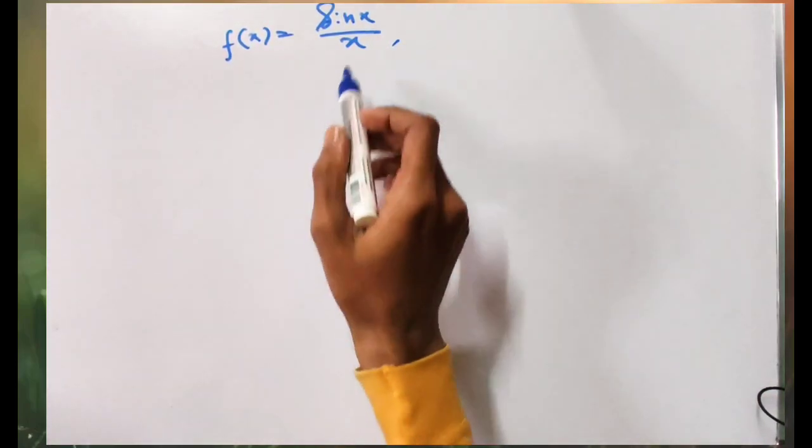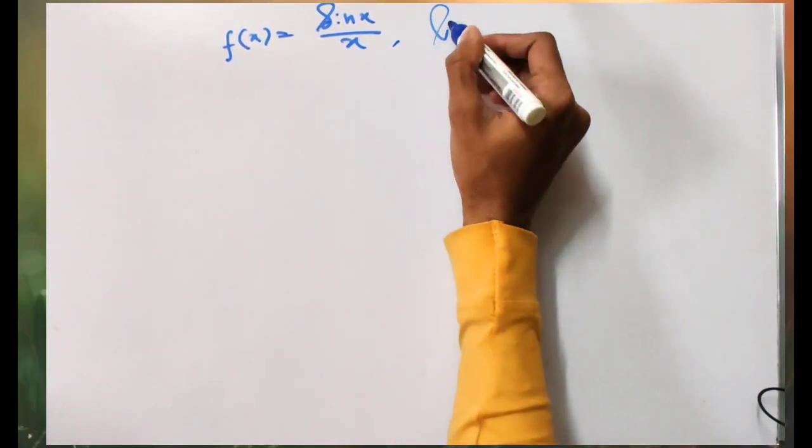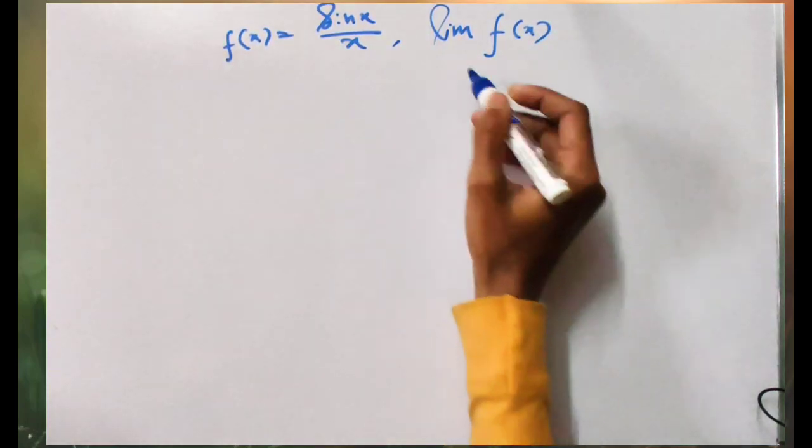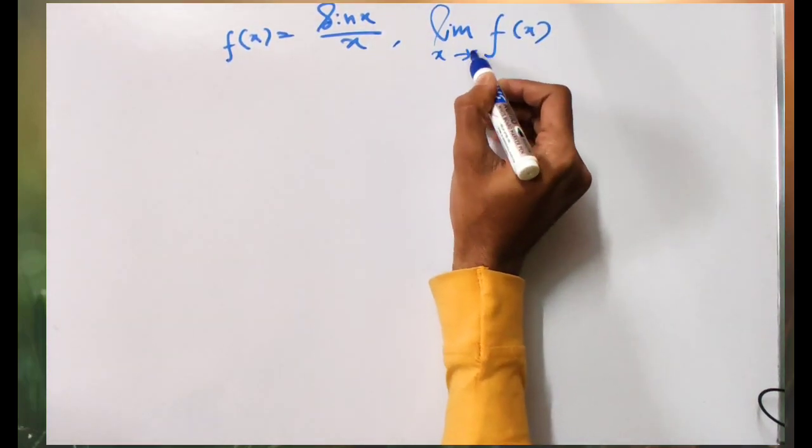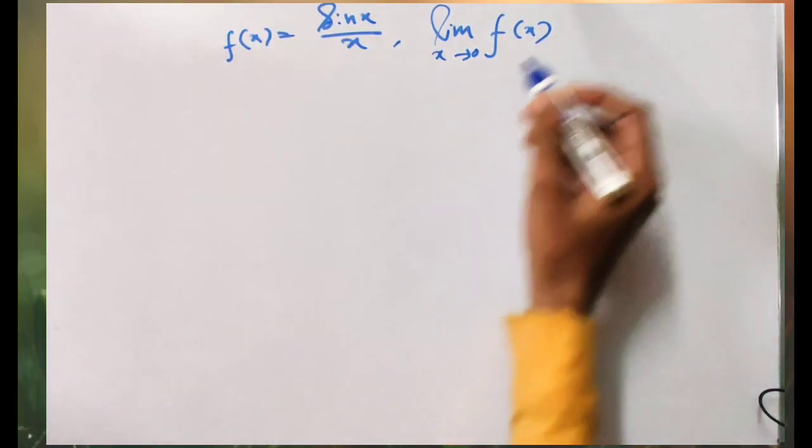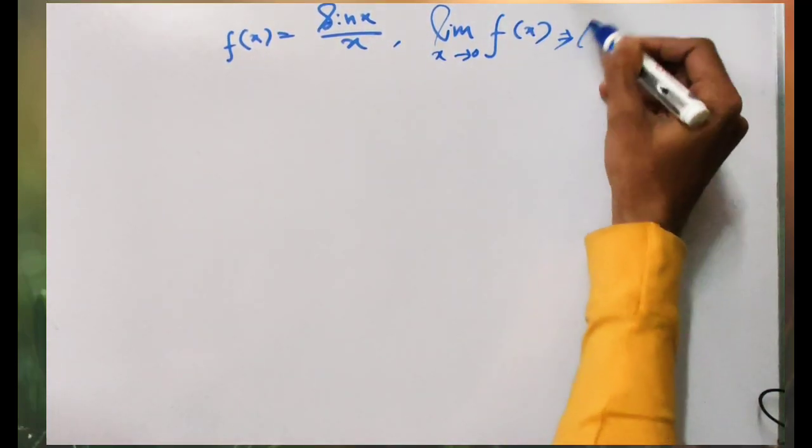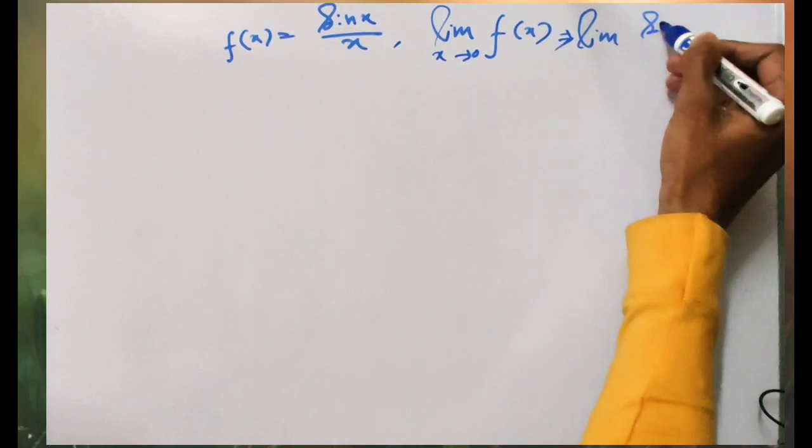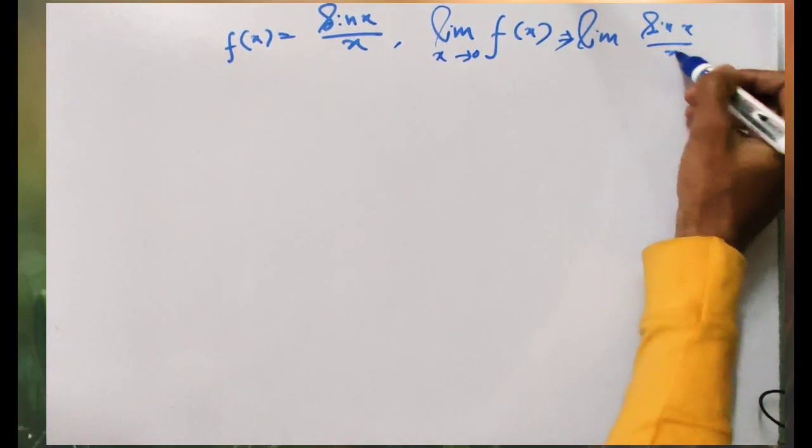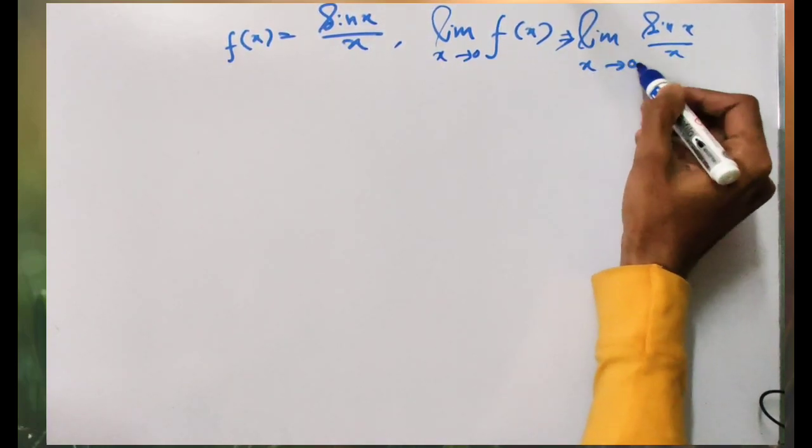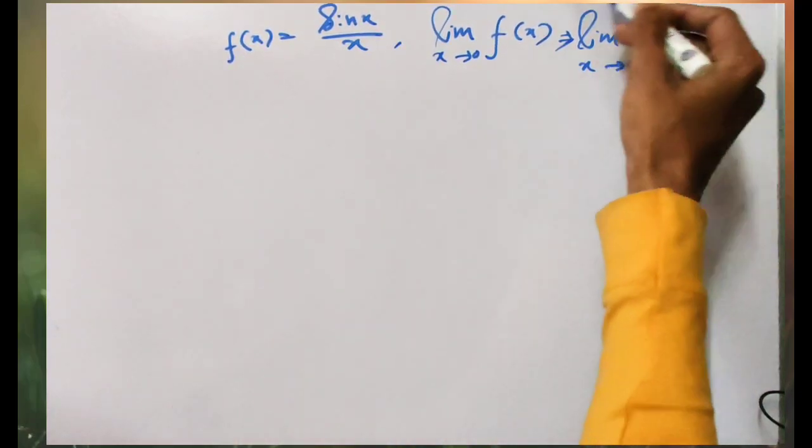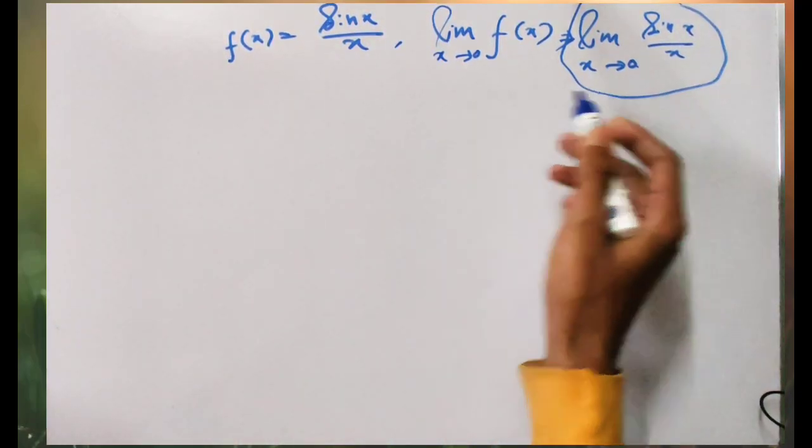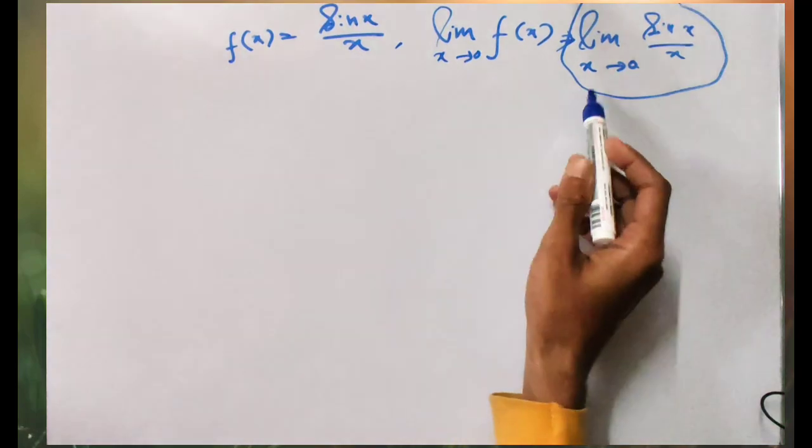Now we are trying to find out the limit of f(x) as x tends to 0. This means we are evaluating the limit of sin(x)/x as x approaches 0.